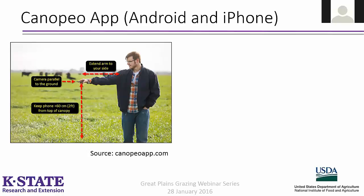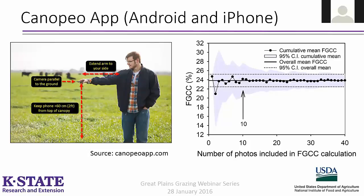The number of pictures to be taken will vary from field to field depending on field uniformity. Generally, more pictures are better, but preliminary data indicates that about five to ten pictures of a pasture should account for most of the within-field variability and give a reliable estimate of green cover. It's a free, very handy app that producers can have on their phone and, as they walk down the wheat pasture, take 5 to 15 pictures to get a very good estimate of percent green cover.